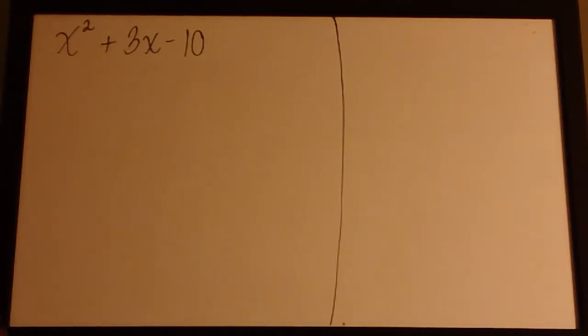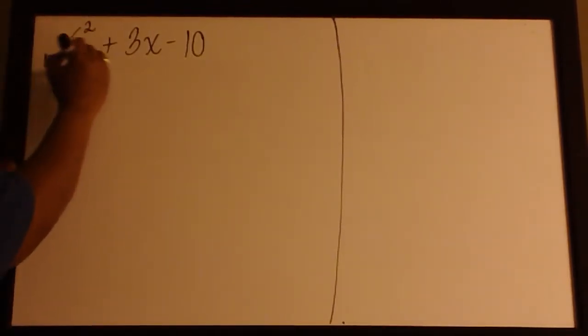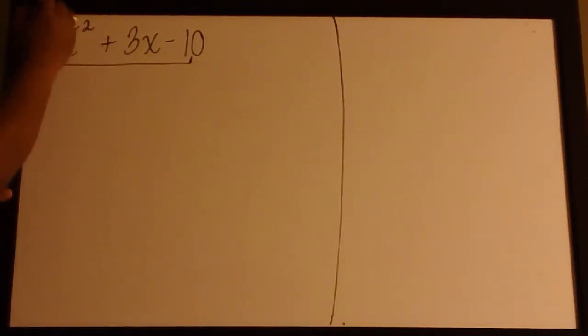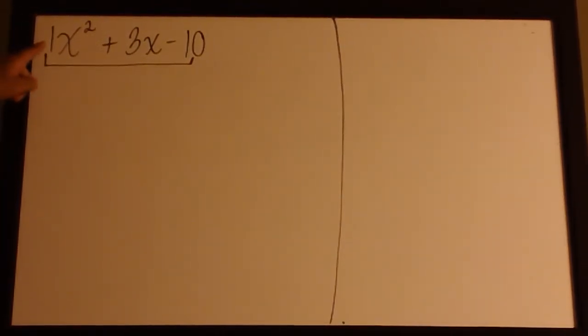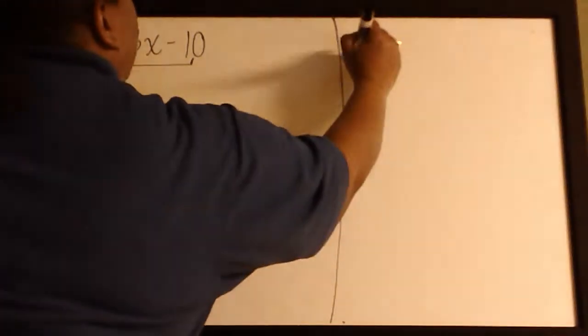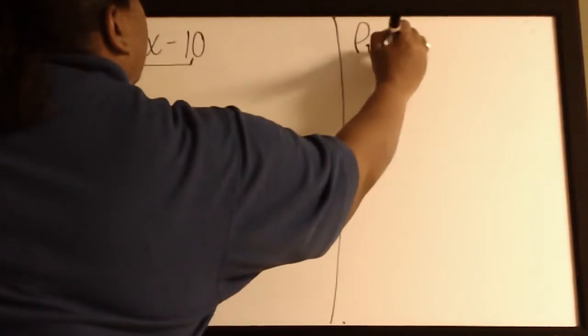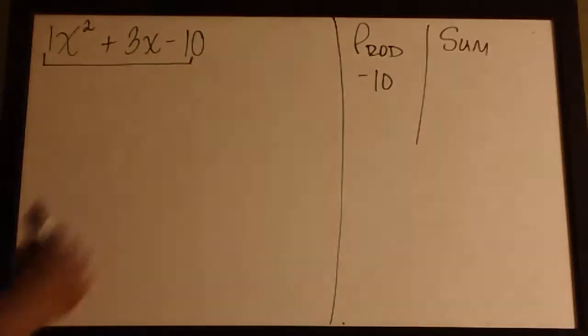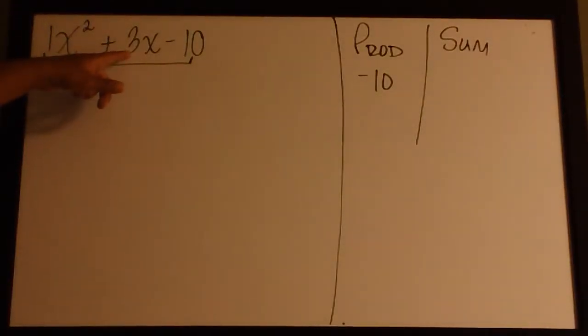So we need a product. We have 1 times negative 10. If you are wondering where I am getting this product from, a 1 is understood to be in front of this x squared. So 1 times negative 10 is negative 10. So we need a product of negative 10 and a sum of 3.